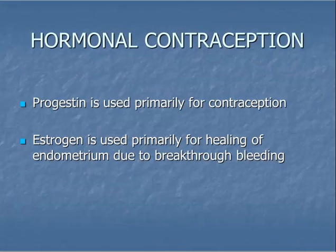Many reversible methods of contraception contain hormones. The principal hormone used is a progestin, and some contraceptives also add an estrogen. The primary role of a progestin is to provide the contraceptive function. The primary purpose of adding estrogen is to stabilize the endometrium and decrease the occurrence of breakthrough bleeding, which is unintentional bleeding that occurs during method use.